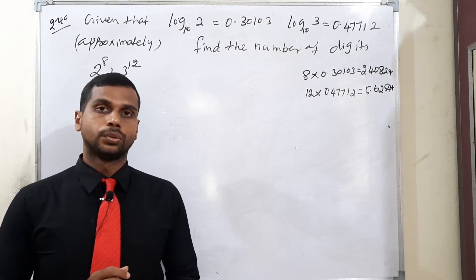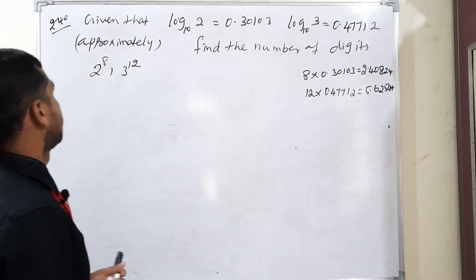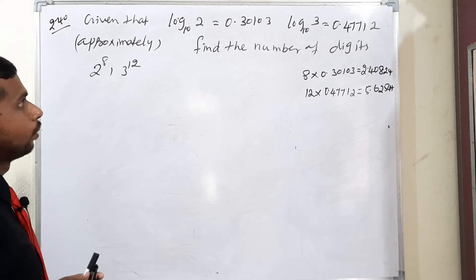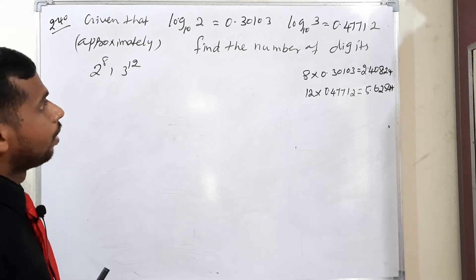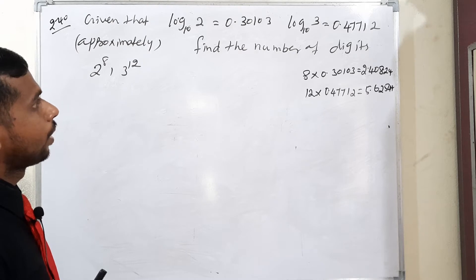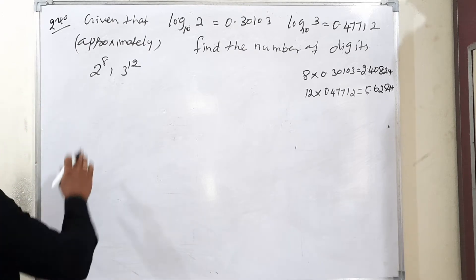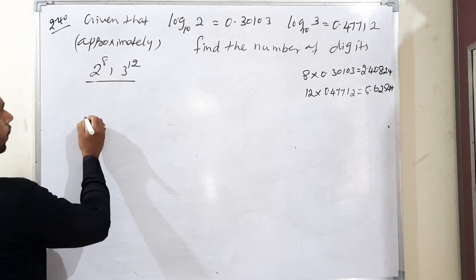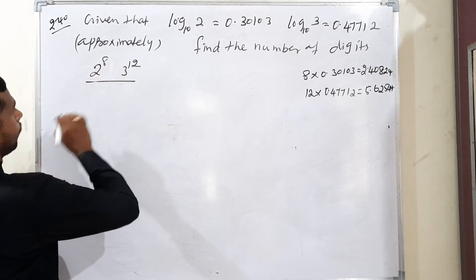I am moving to continue doing example 2.40. Question: given that log 2 base 10 is equal to 0.30103 and log 3 base 10 is equal to 0.4712 approximately, find the number of digits in 2 to the power 8 into 3 to the power 12.